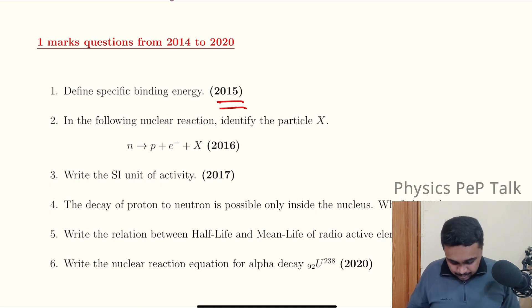In the following nuclear reaction, identify the particle X. In 2016, a neutron converts to proton plus electron plus any element. So what is X? The X is anti-neutrino.